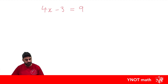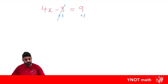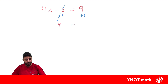We're going to get rid of that minus 3 first by adding 3 to both sides, because whatever you do to one side you do to the other. Minus 3 plus 3 is 0 — that's the whole reason for doing it. Equals under equals. On the left hand side, after getting rid of that 3, we're left with 4x. And then 9 plus 3 gives us 12.